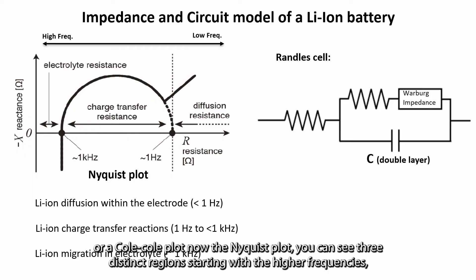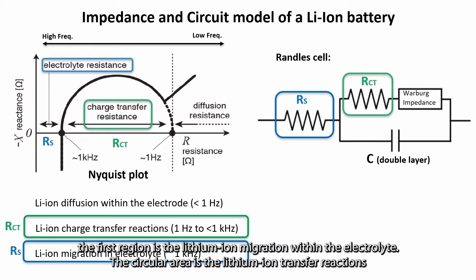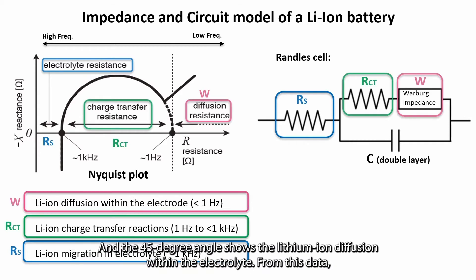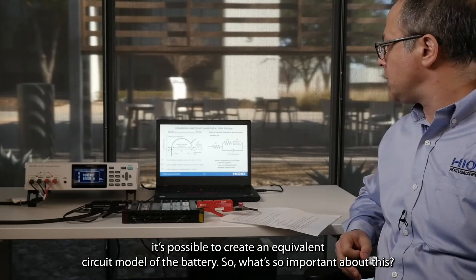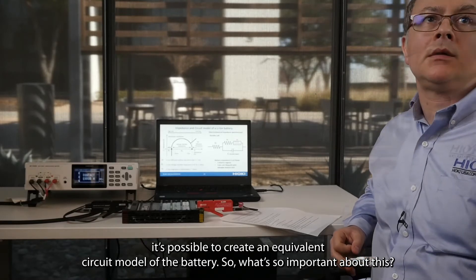In the Nyquist plot you can see three distinct regions starting with the higher frequencies. The first region is the lithium ion migration in the electrolyte. The circular area represents the lithium ion charge transfer reactions, and the 45-degree angle shows the lithium ion diffusion within the electrode. From this data it's possible to create an equivalent circuit model of the battery.